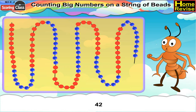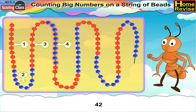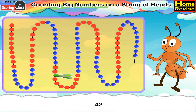Now 42. For number 42, first we will take 10 red beads, followed by 10 blue beads, further followed by 10 red beads, then again followed by 10 blue beads. And now add 2 more red beads to it. Place the clip after 2 more red beads. This is your number 42.